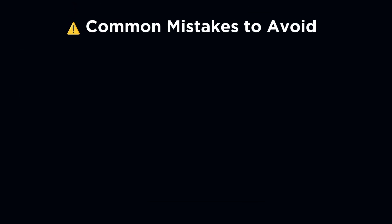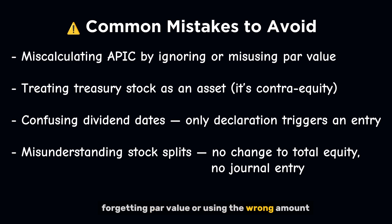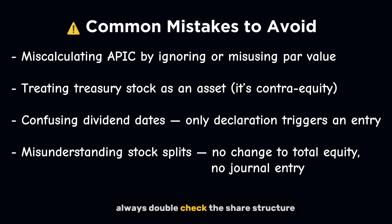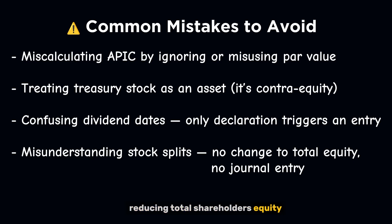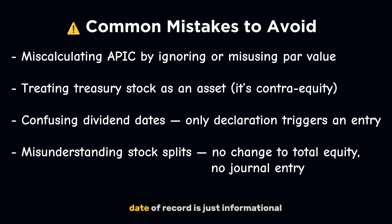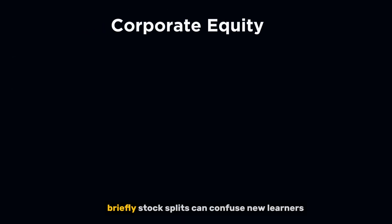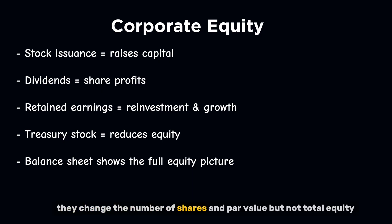Don't fall into these traps. First, forgetting par value or using the wrong amount when calculating APIC — always double-check the share structure. Second, thinking treasury stock is an asset — it's not; it's a contra-equity account reducing total shareholders' equity. Third, mixing up dividend dates — only the date of declaration triggers a journal entry; the date of record is just informational, and the date of payment is when cash leaves the company. Also, stock splits change the number of shares and par value but not total equity — no journal entry is needed, only a memo note.